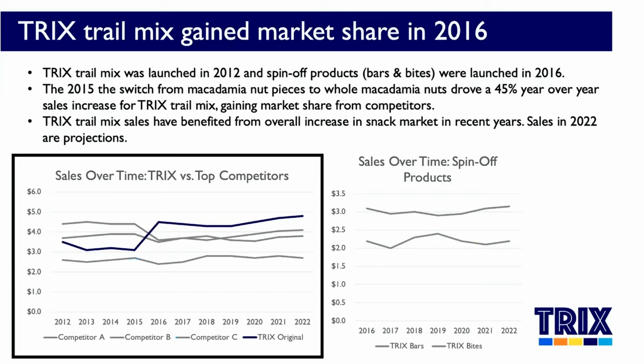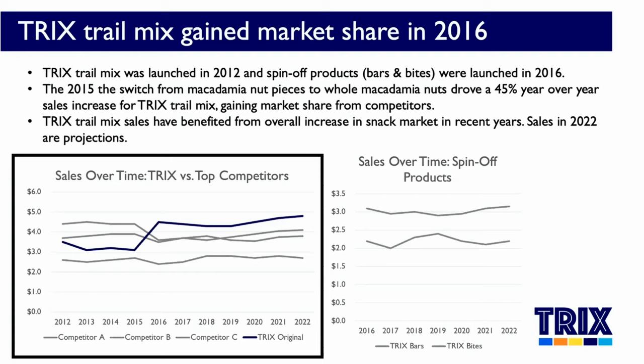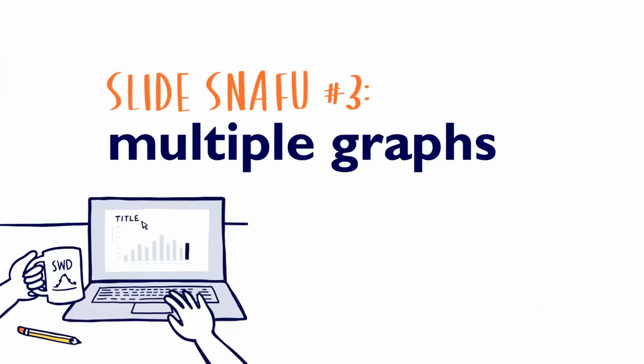One thing we've complicated here with all these gray lines is that a separate legend at the bottom of each graph isn't going to work, but I can deal with that by labeling the data series directly. I could even take my use of color a bit further — use it to highlight something else in that graph to help draw attention there, which is the sales of our competitors declining over that same period that Trix trail mix sales increased. There's still a lot to look at on this page — that is in part because of slide slip-up number three: multiple graphs.